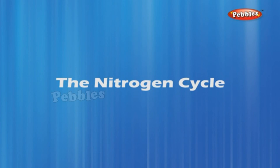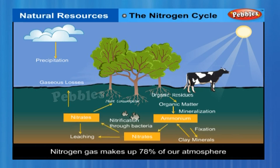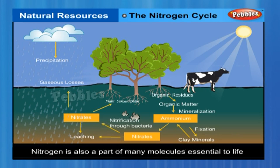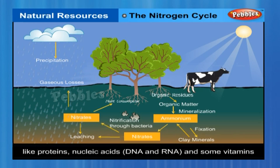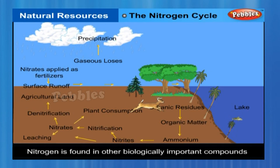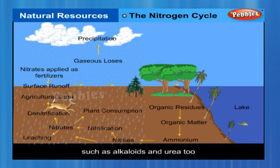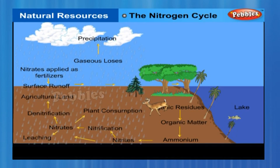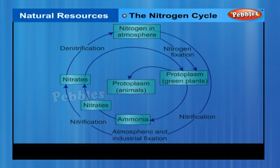The nitrogen cycle. Nitrogen gas makes up 78% of our atmosphere, and nitrogen is also a part of many molecules essential to life, like proteins, nucleic acids, DNA and RNA, and some vitamins. Nitrogen is found in other biologically important compounds such as alkaloids and urea too. Nitrogen is thus an essential nutrient for life forms, and life would be simple if all life forms could use atmospheric nitrogen directly. However, other than a few forms of bacteria, life forms are not able to convert the comparatively inert nitrogen molecule into forms like nitrates and nitrides, which can be taken up and used to make the required molecules.